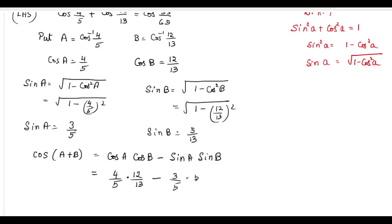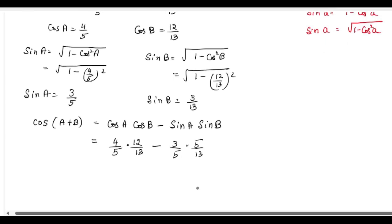into sin B is 5 by 13. So what we get is 48 by 65 minus 15 by 65